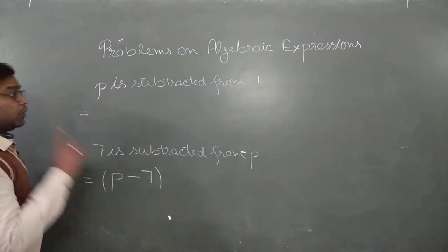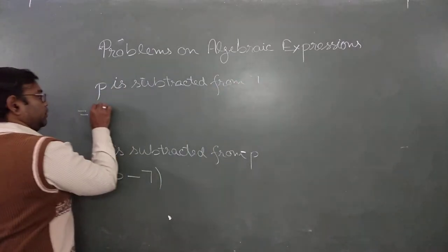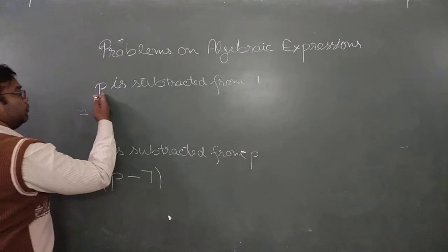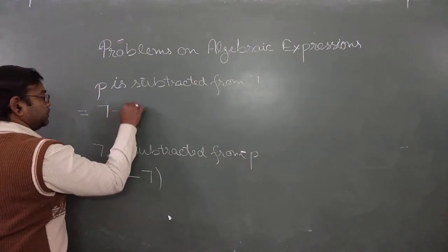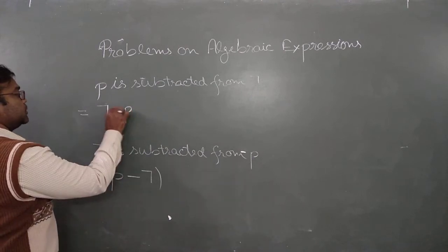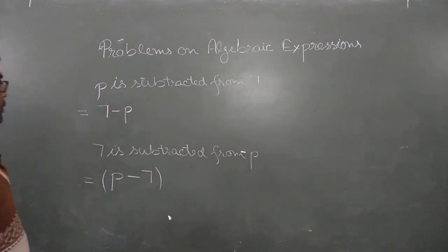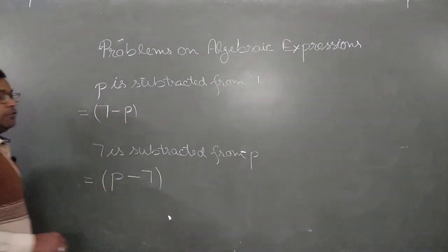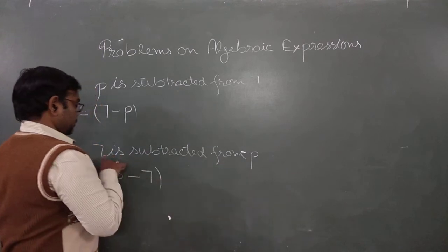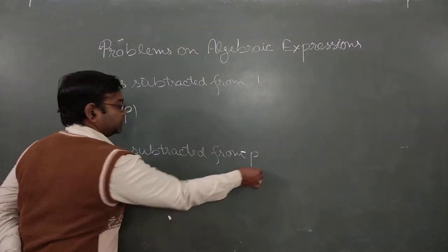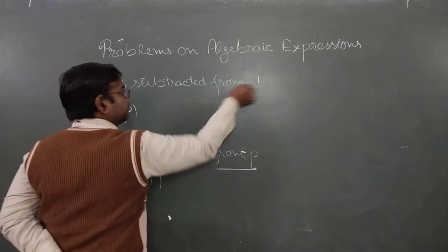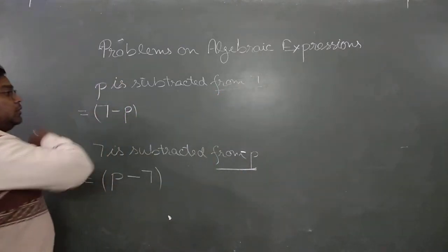If we change the statement to: p is subtracted from 7, then 7 is the bigger one, so we write 7 at first, then subtract p. So it's 7 minus p. Remember: '7 is subtracted from p' means p is bigger and comes first; 'p is subtracted from 7' means 7 must come at the first place.